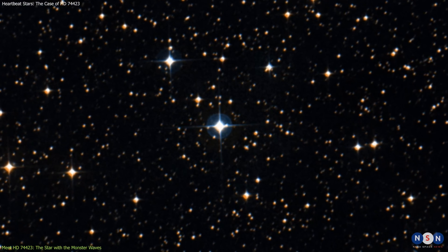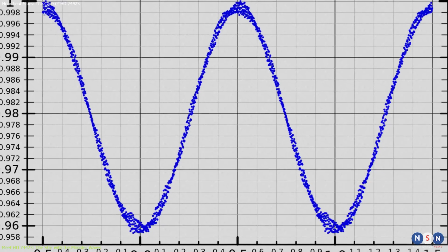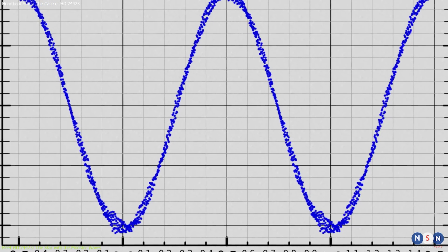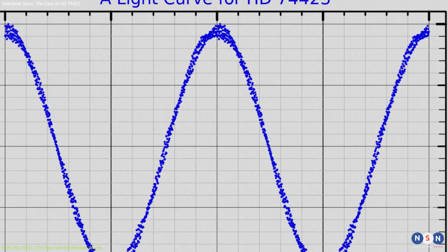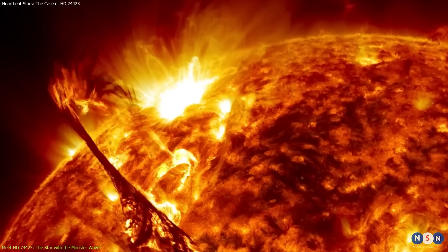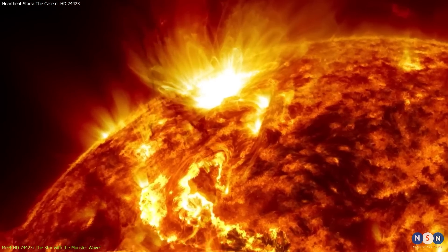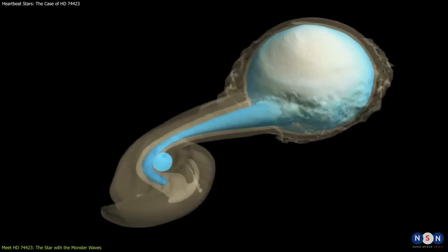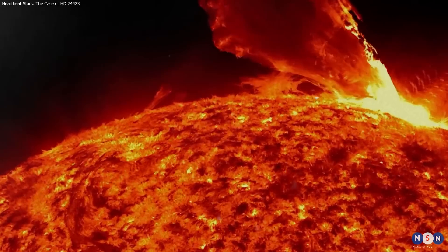But what makes HD 74423 really special is that it has the largest tidal amplitude ever observed in any star system. This means that the difference between its highest and lowest tides is huge, which is about three times the radius of the Sun. This creates enormous waves on the surface of the star that are as tall as three suns. These waves are so big and fast that they break and splash on the star's surface, releasing a lot of energy into space.